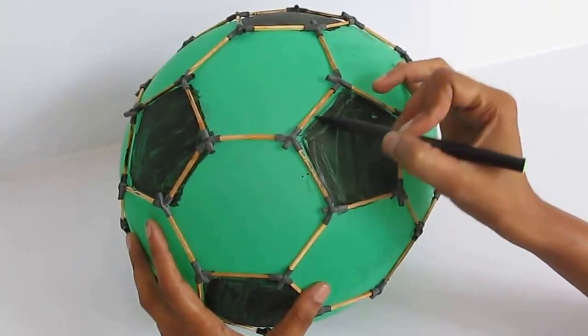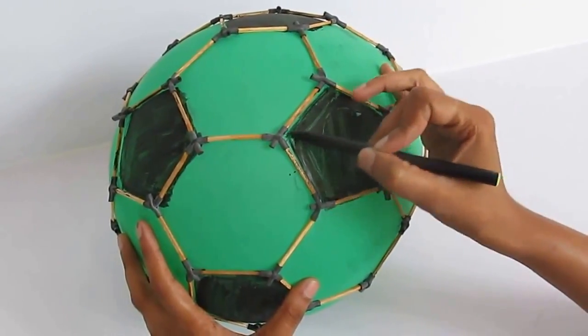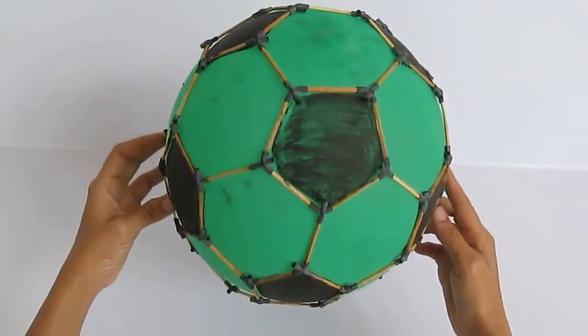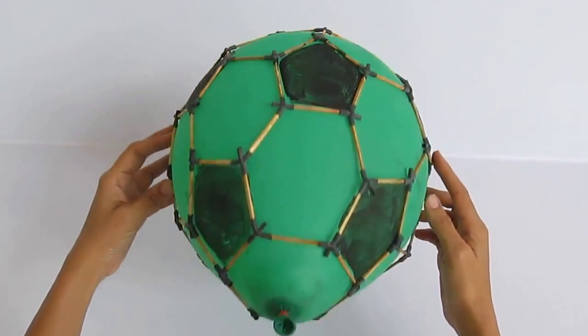Notice, we have made total 12 pentagons and 10 hexagons in our 2 structures. So how come we end up with 20 hexagons in our football? If you observe closely, you can see it.